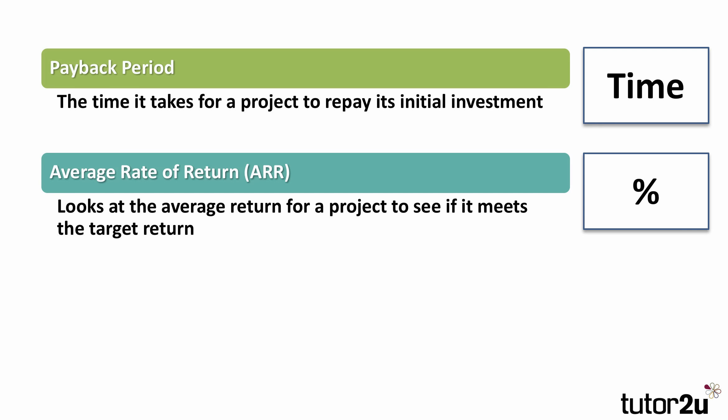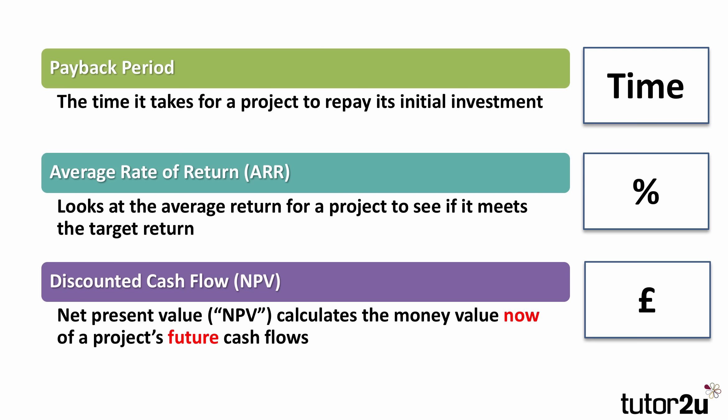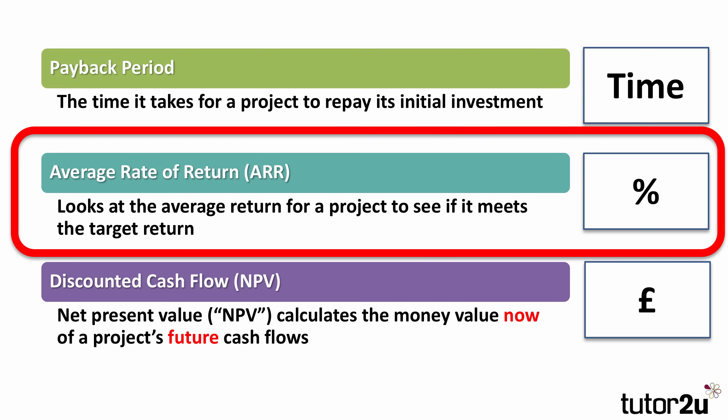The one we're going to look at here is ARR — average rate of return — which looks at a percentage return on the project. And lastly, discounted cash flow net present value, which calculates the money value now of the future cash flows. But we're going to take a look in the next few minutes at how we calculate ARR.